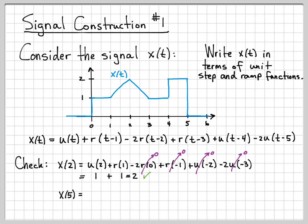We can do another one if we want. We can check what happens at time five. At time five, that's u(5) plus r(4) minus 2 times r(3) plus r(2) plus u(1) plus u(0). And if we evaluate what these are,